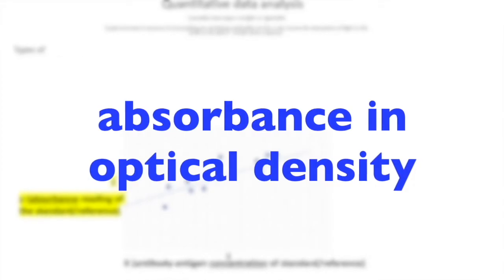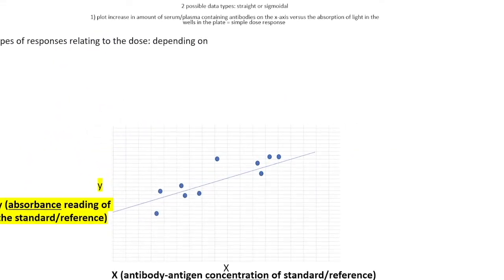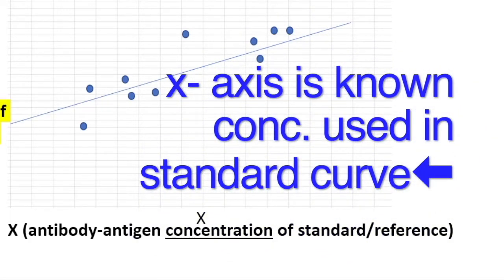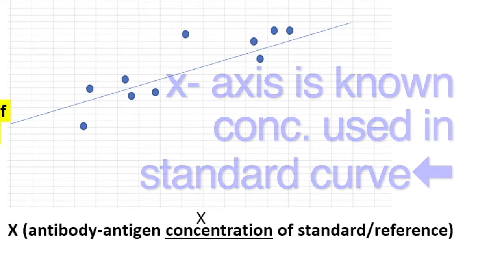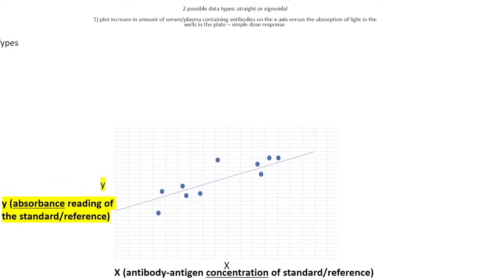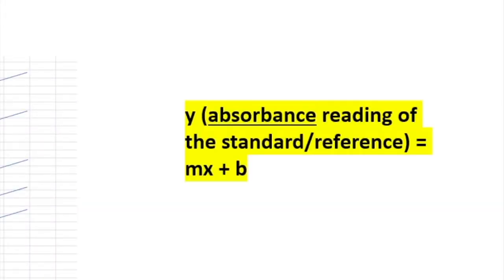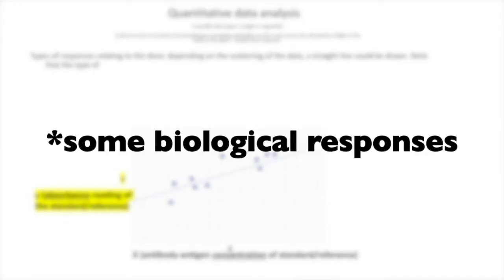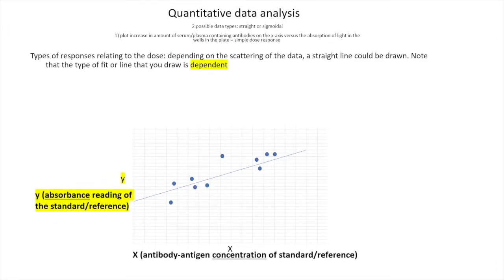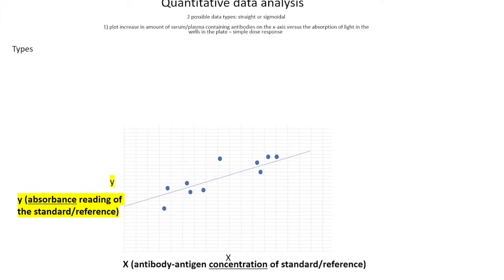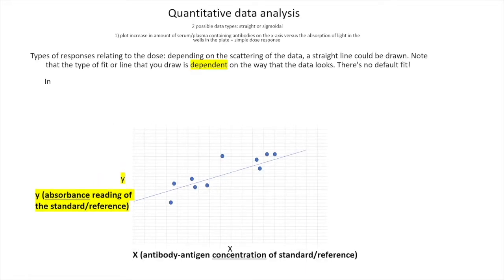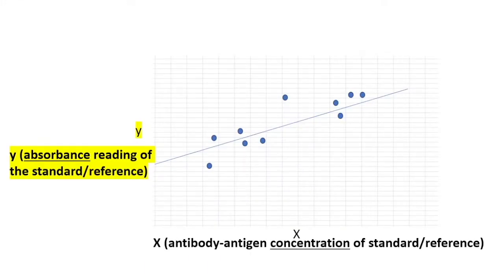Optical density is your y-variable (the response) and your independent variable — the known concentration — goes on the x-axis, from which you infer the unknown concentrations. You draw a line, and the equation of that line turns out to be y = mx + b. However, you can't always use a straight line for biological responses — it turns out it's actually a sigmoidal response where binding differs at different concentrations. A straight line with linear regression and y = mx + b is only valid when the data points closely follow a straight line.